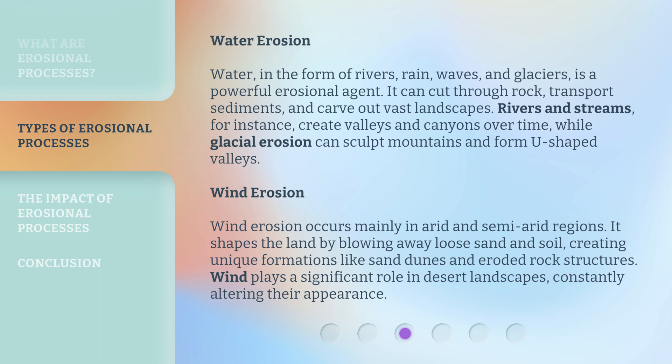Wind Erosion. Wind erosion occurs mainly in arid and semi-arid regions. It shapes the land by blowing away loose sand and soil, creating unique formations like sand dunes and eroded rock structures. Wind plays a significant role in desert landscapes, constantly altering their appearance.